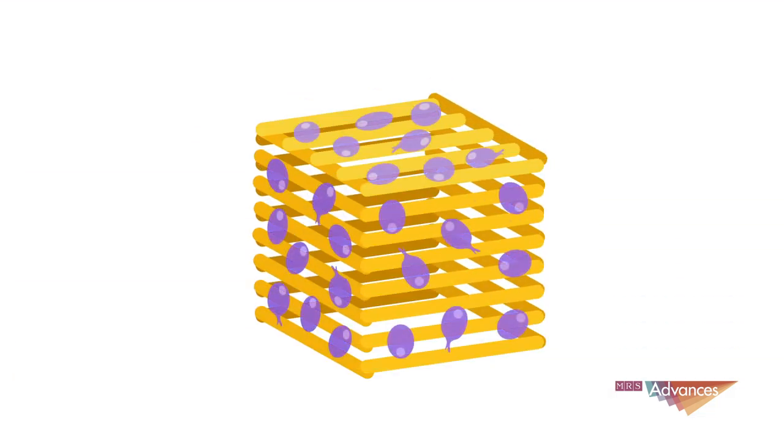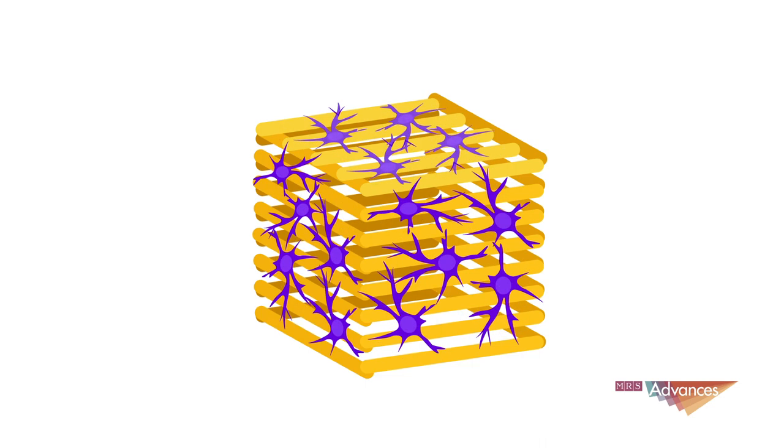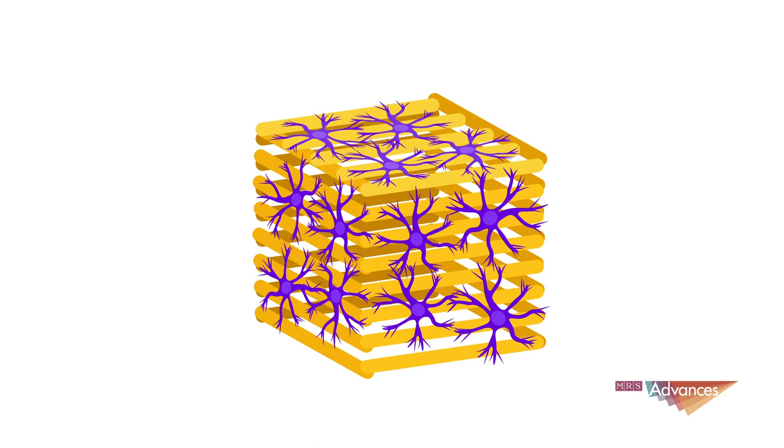Unfortunately, even this revolutionary technique has proved limiting in the study of oligodendrocytes. Traditional printing materials are often too stiff to coax cells into maturing, as they naturally do. And materials that can pull off the trick are too pliable to actually be printed.